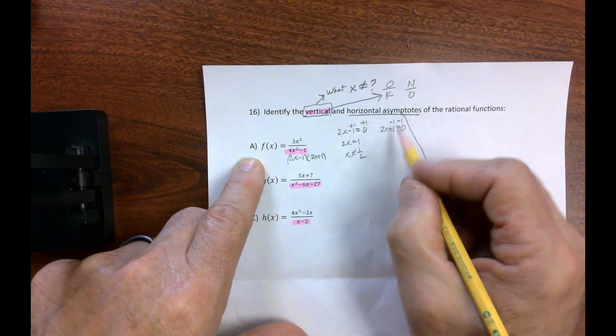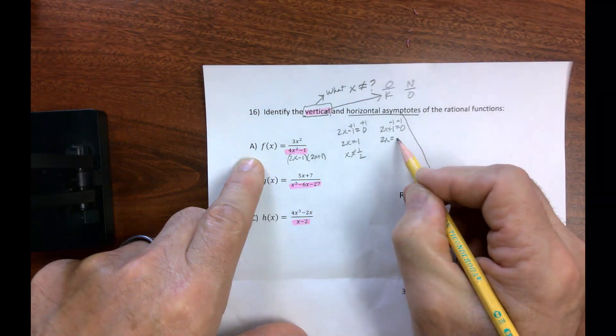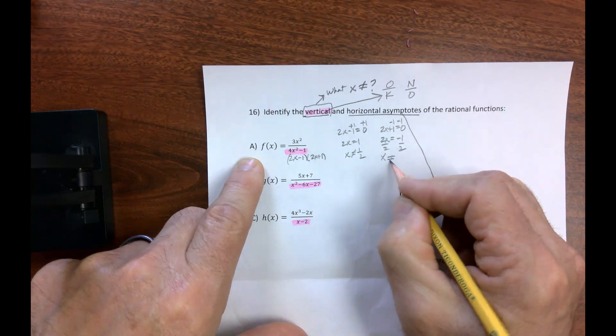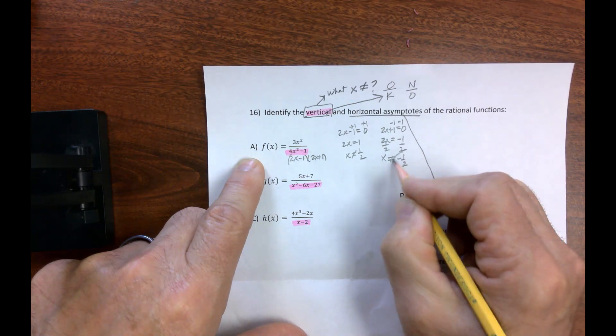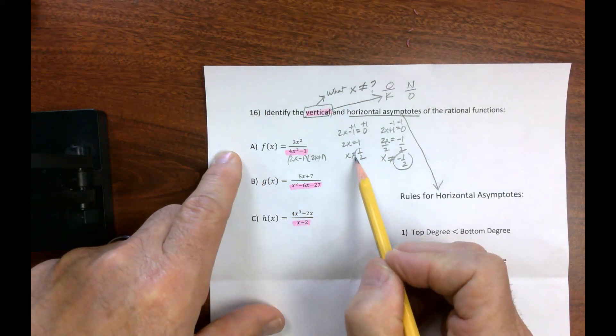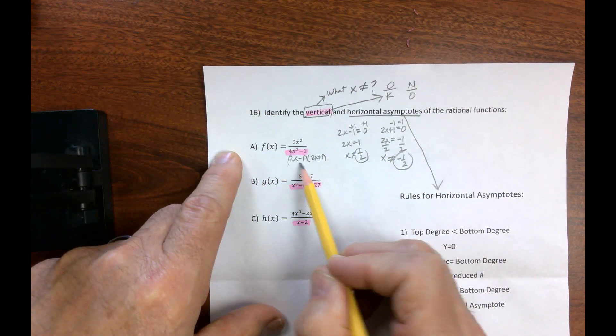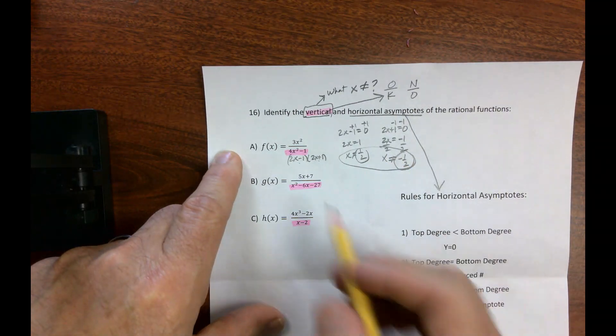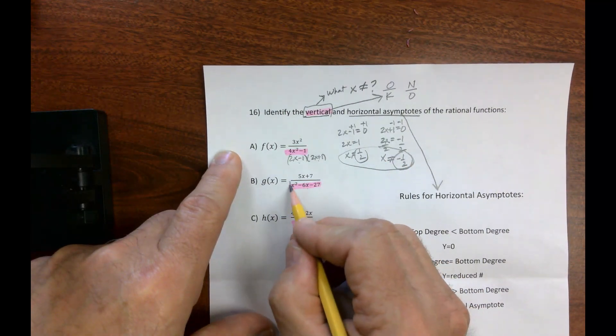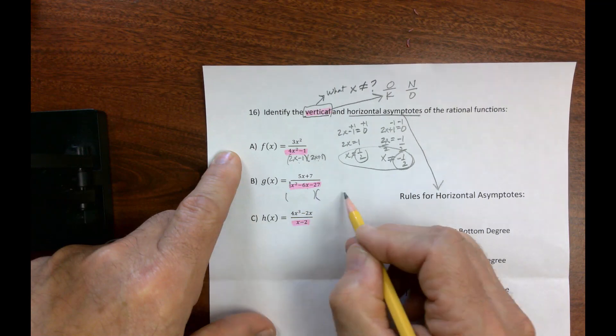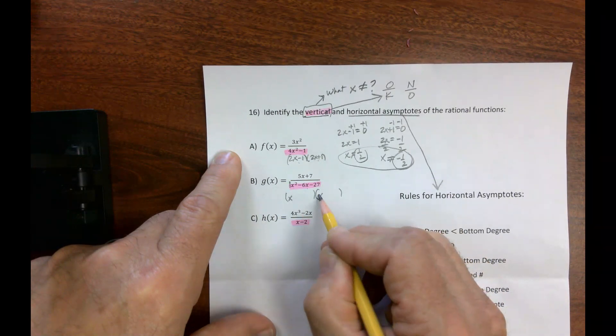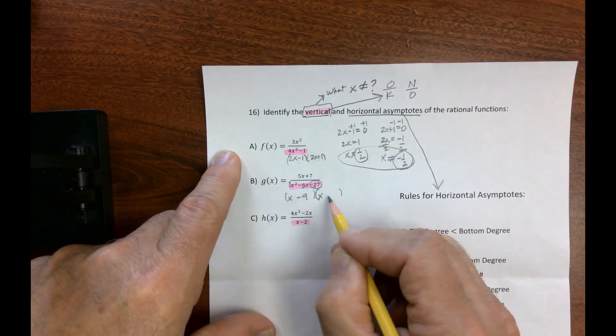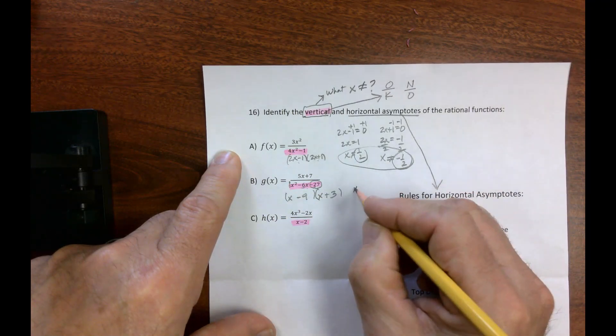Same thing over here, subtract 1, so I get 2x is negative 1, divided by 2. x can't be negative 1 half, because if I plug that in right here, I'd get a zero. If I plug this one in right here, I'd get a zero. So this is my domain, this is what x can't be. This one is a trinomial, so x and x, two factors of negative 27 that are negative 6 are negative 9 and 3, so from there I can just look at it.